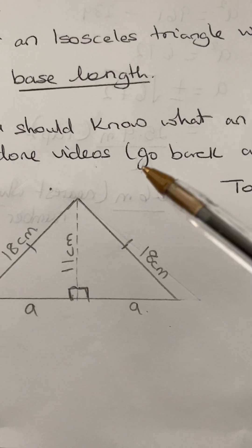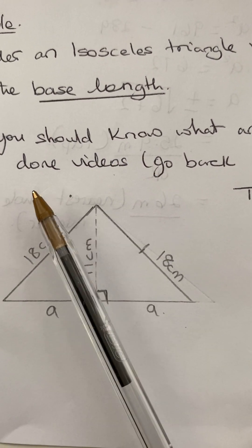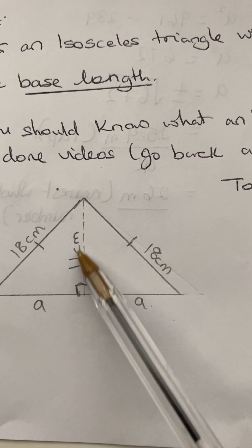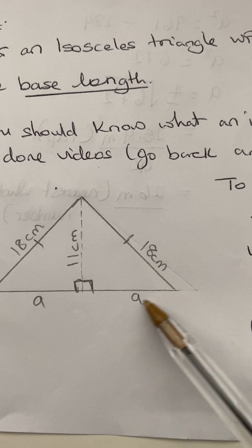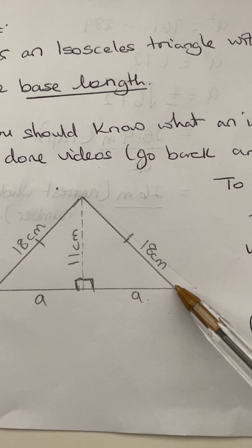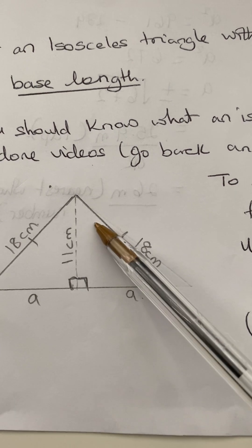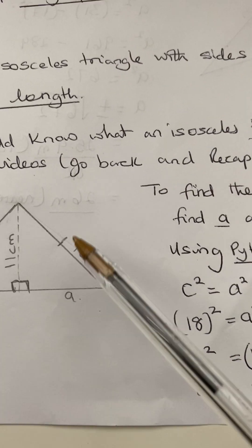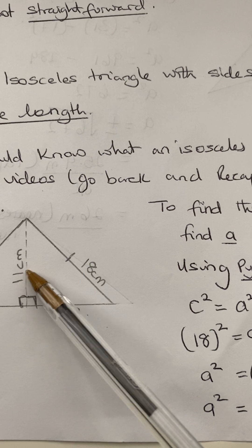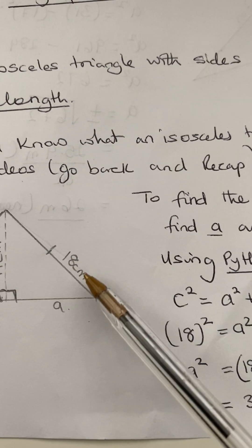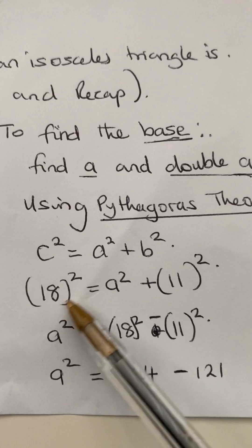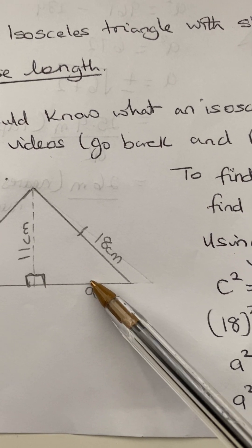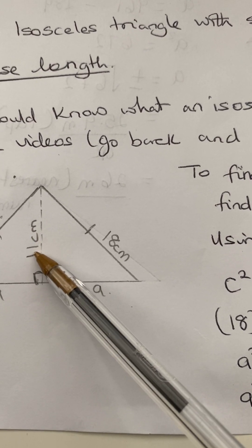I'm going to ignore one side. I know the height, which is my B. I don't know A. I know the long side, which is my C. So straight away: 18 — the unit is in centimeters — 18 squared will be equal to A squared plus 11 squared.